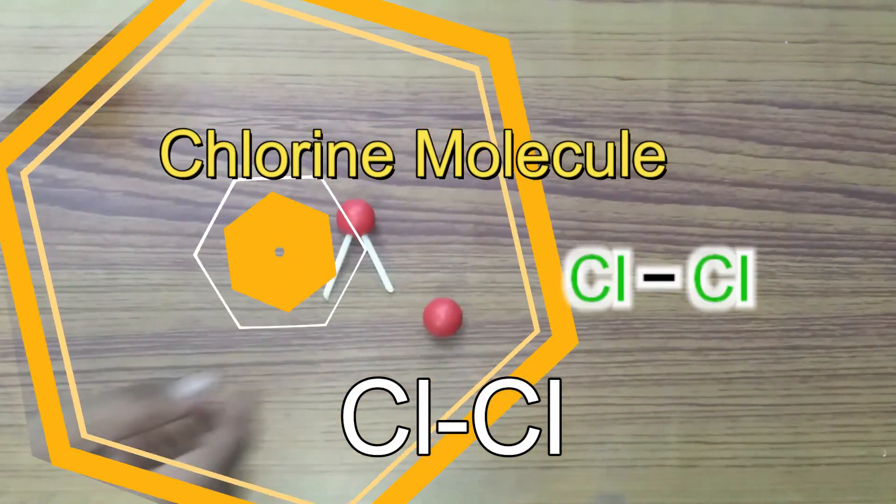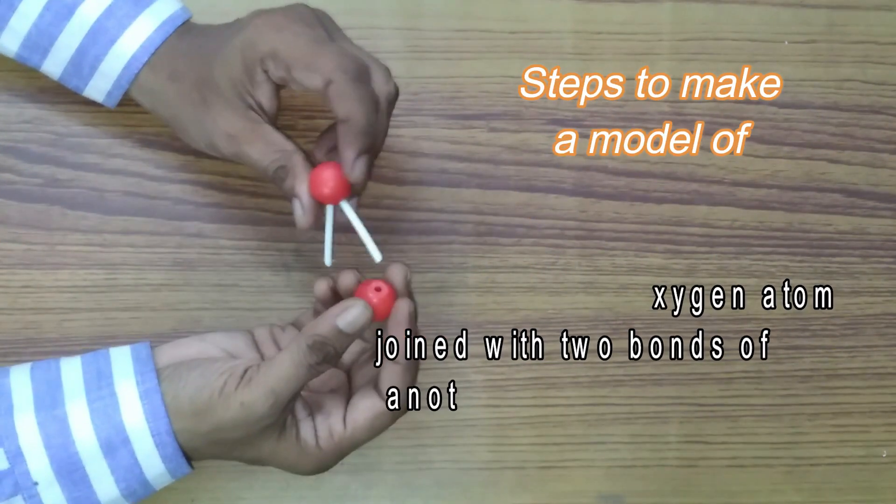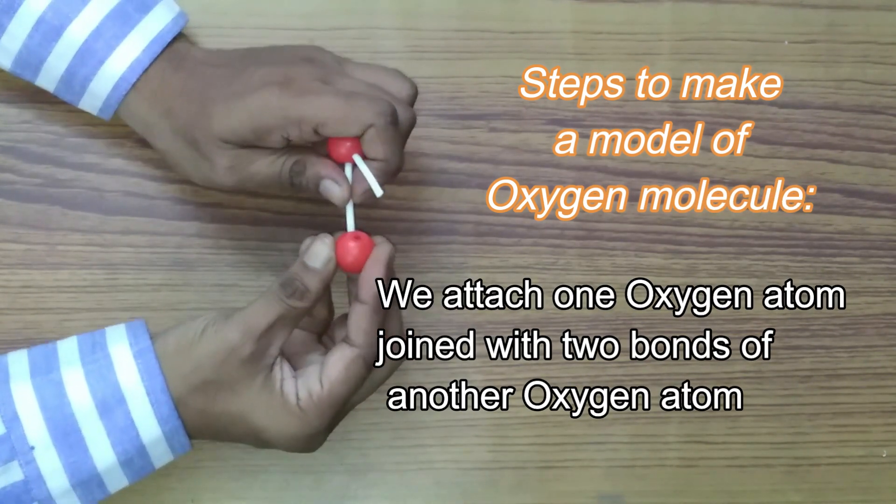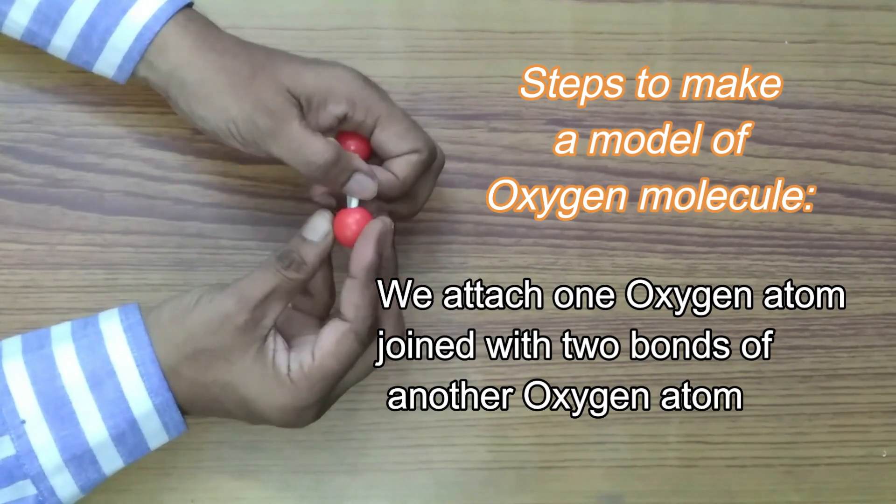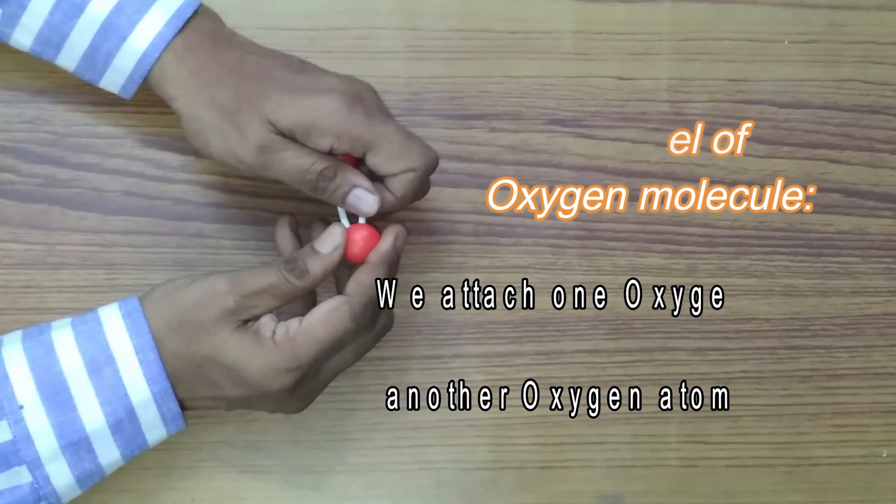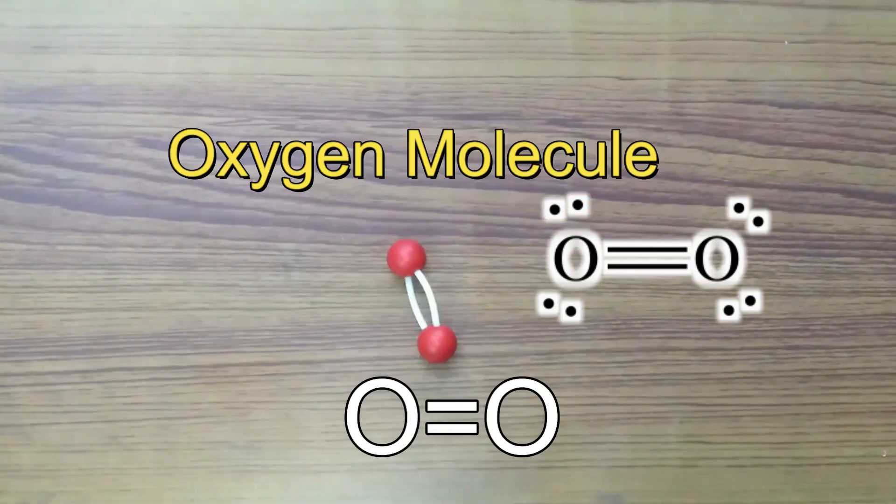To make oxygen molecule we attach one oxygen atom joined with two bonds to another oxygen atom like this and an oxygen molecule is made with double bonds.